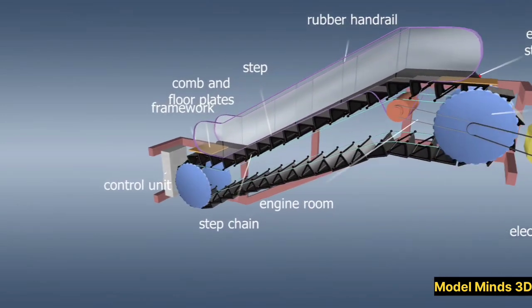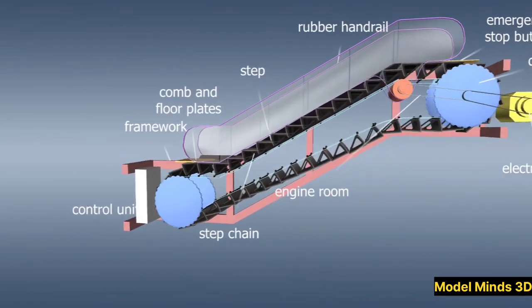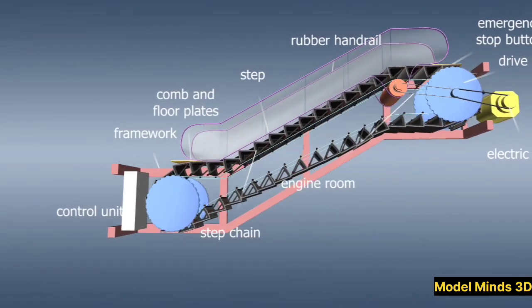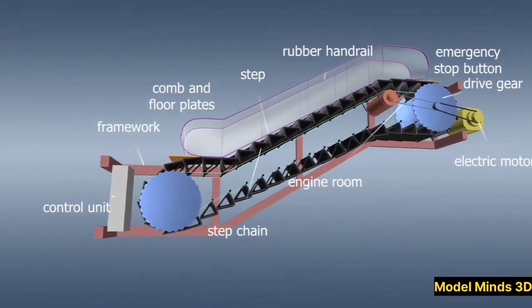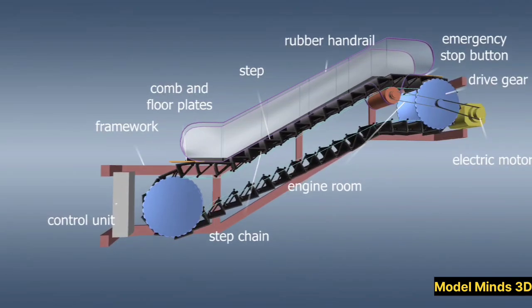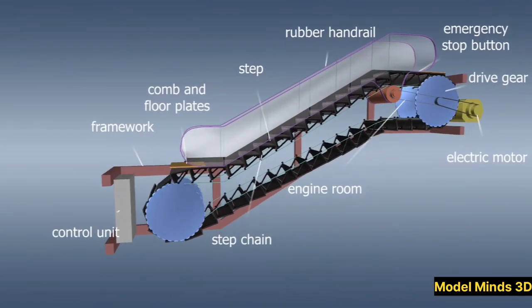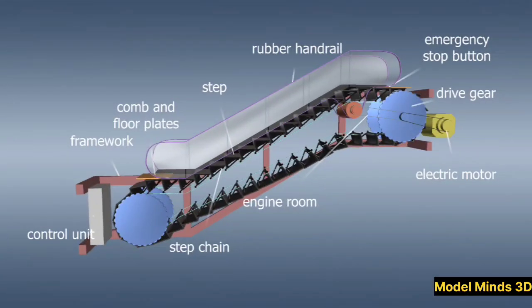Why are escalators at an angle? Most escalators are positioned at a 30 or 35 degree angle. This angle ensures that passengers can step on and off safely without losing balance. The machine operates efficiently, avoiding unnecessary strain on the motor. Escalators remain compact, making them ideal for crowded spaces.